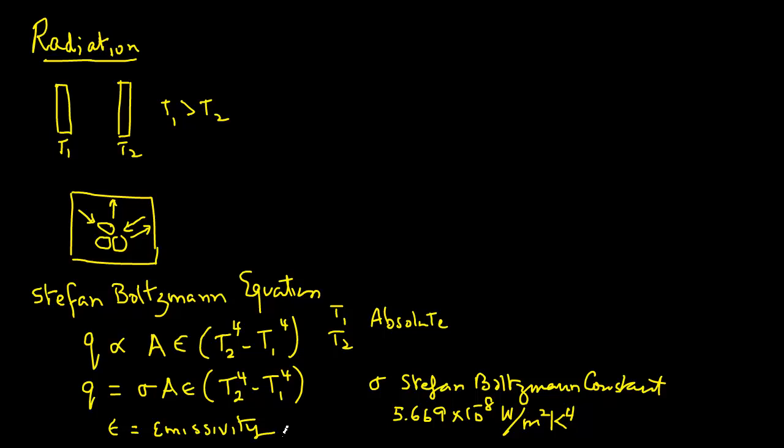One thing to be careful when you're using this equation: make sure that if you are given the temperatures of these two surfaces in Celsius, you first convert them into Kelvin. You do that by taking the temperature in degrees C and adding 273 to it, and that will give you the temperature in Kelvin.